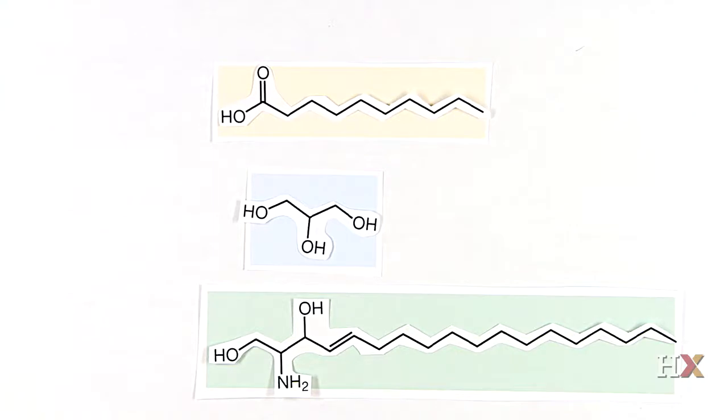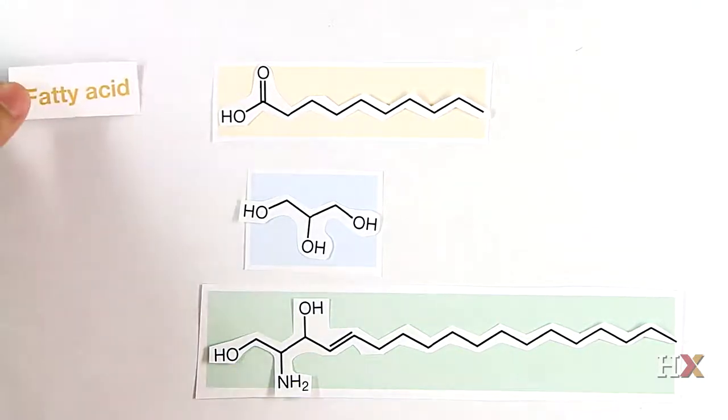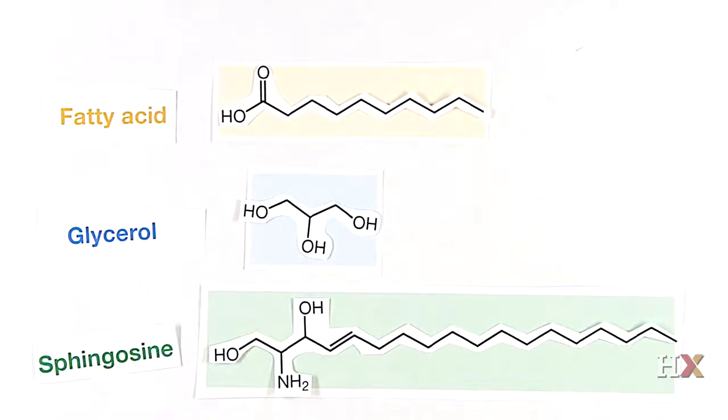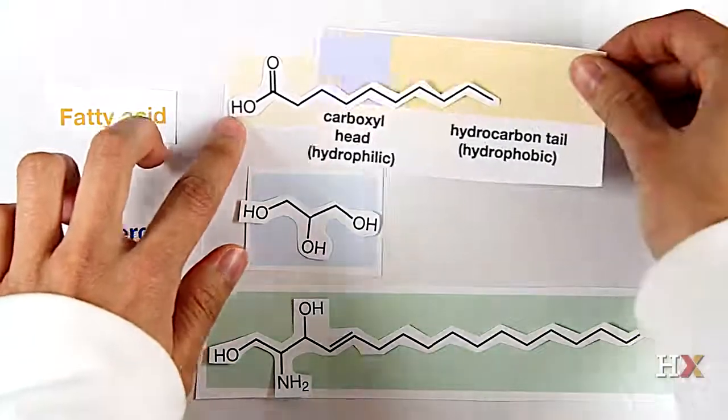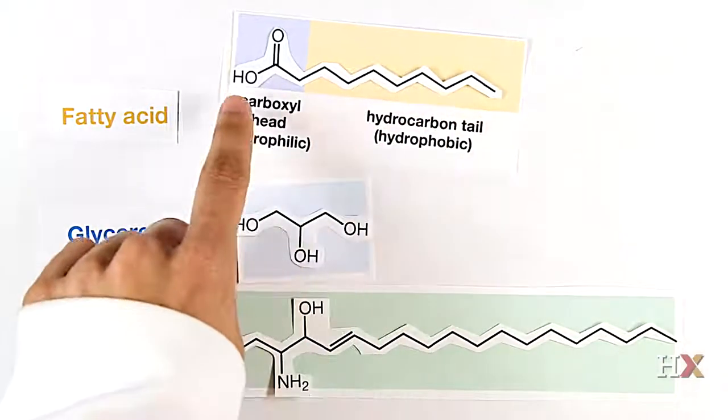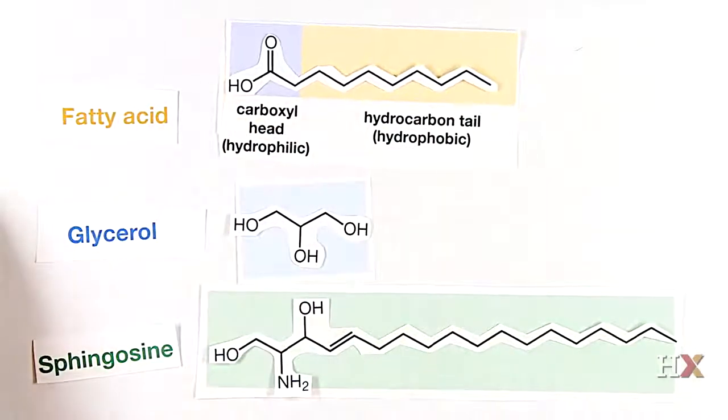All right. Well, here are three representative building blocks of lipids. A fatty acid molecule, a glycerol molecule, and a sphingosine. Glycerol and sphingosine are alcohols that form the backbone of many lipids, and fatty acids form the lipid tails. The fatty acid structure contains a linear hydrocarbon chain and a carboxyl group. The hydrocarbon chain is hydrophobic, while the polar carboxyl group is hydrophilic.